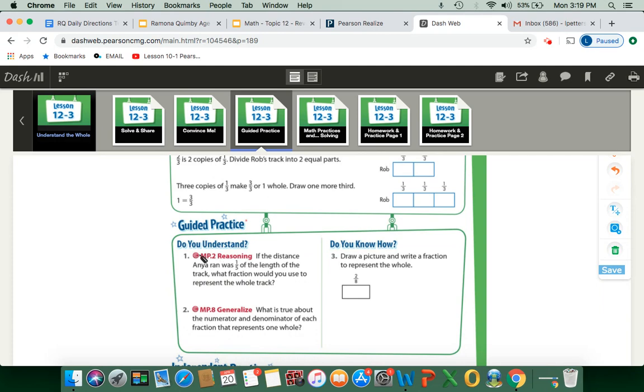So let's take a look at number one here. If the distance Anya ran was one-fifth of the length of the track, what fraction would you use to represent the whole track? So we only know that she ran one-fifth. They want to know what's the whole track, what's the fraction of the whole track. So we go straight to our denominator here. We see that it's a five as the denominator. So we know that there's five equal parts of one-fifth, giving us five over five for the whole track.